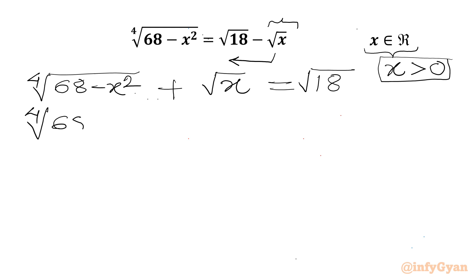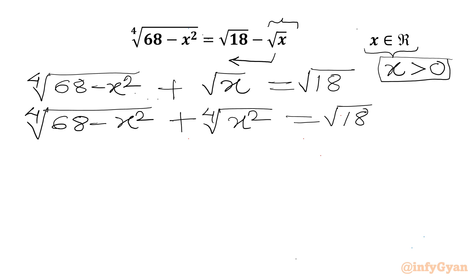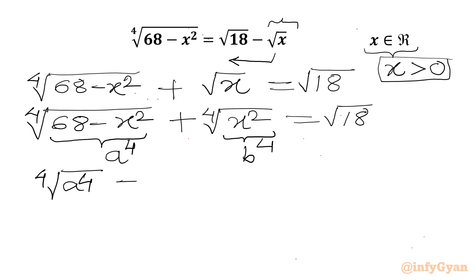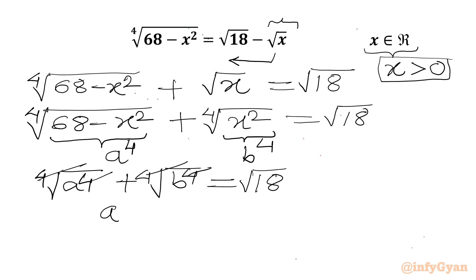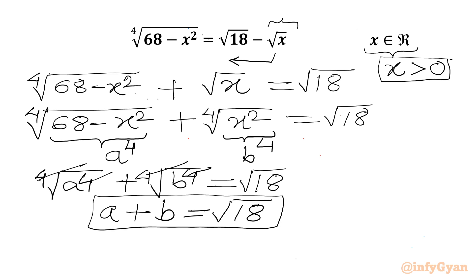We can rewrite this as: 4th root of (68 minus x²) plus 4th root of x² equal to square root of 18. Now we use substitutions: let the first radicand equal a⁴, and x² equal b⁴. So our equation becomes 4th root of a⁴ plus 4th root of b⁴ equal to square root of 18, which simplifies to our first equation: a plus b equal to square root of 18.